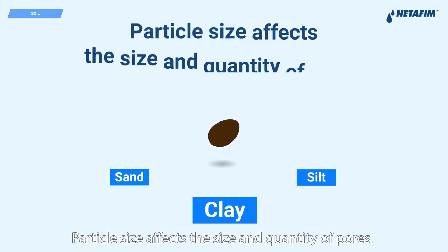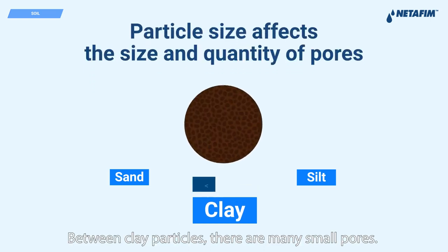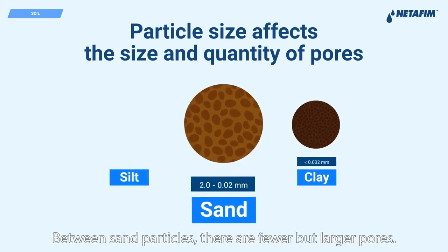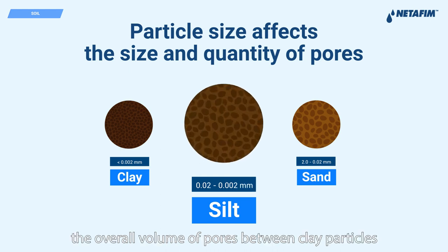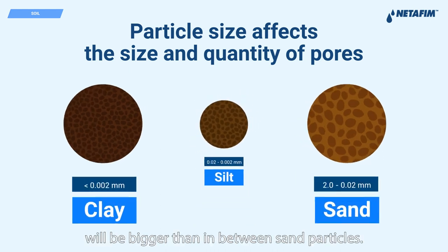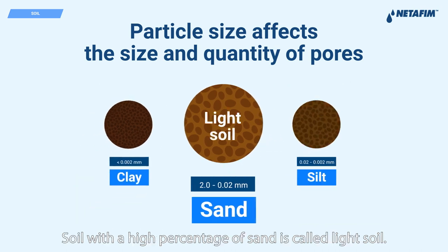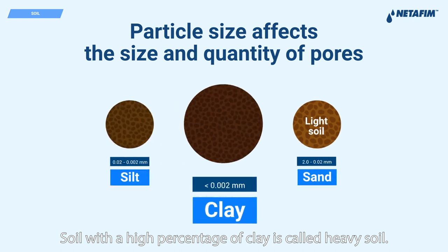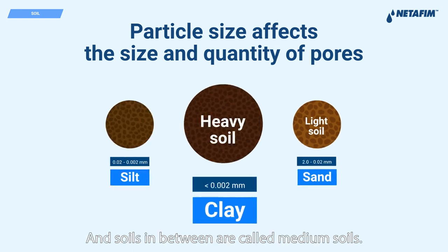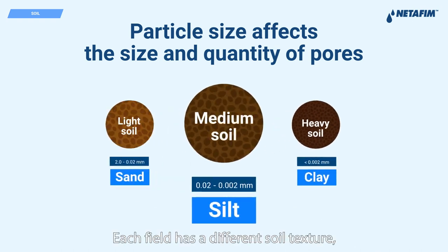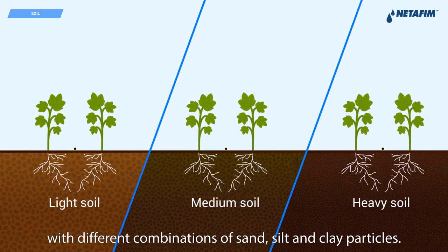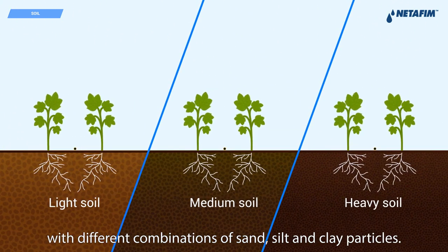Particle size affects the size and quantity of pores. Between clay particles there are many small pores. Between sand particles there are fewer but larger pores. In a given volume of soil, the overall volume of pores between clay particles will be bigger than between sand particles. Soil with a high percentage of sand is called light soil. Soil with a high percentage of clay is called heavy soil. Soils in between are called medium soils. Each field has a different soil texture with different combinations of sand, silt and clay particles.